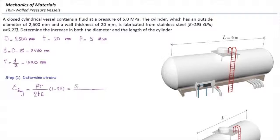Now I'll plug in the values: P is 5 megapascals, R is 1,230 mm, thickness is 20 mm, and the modulus of elasticity must be converted to megapascals to be compatible with P. Multiplying by 1 minus 2ν, the strain is determined to be 366 microepsilon in the longitudinal direction.